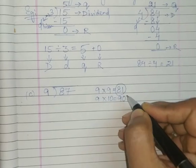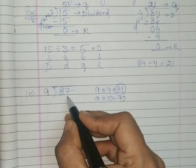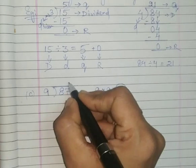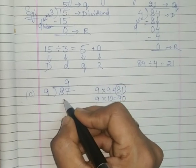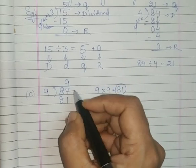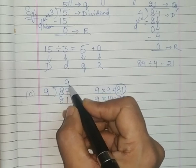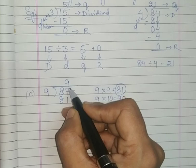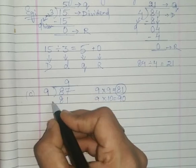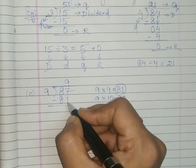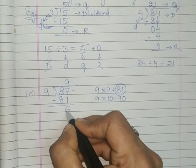So always you are going to take the number which is less than the dividend. So 9 nines are 81. And remember children, when you are writing, you are writing 9 on the top, on the right top. Now subtract: 7 minus 1 is 6, 8 minus 8 is 0. You may write it, you may not write it.